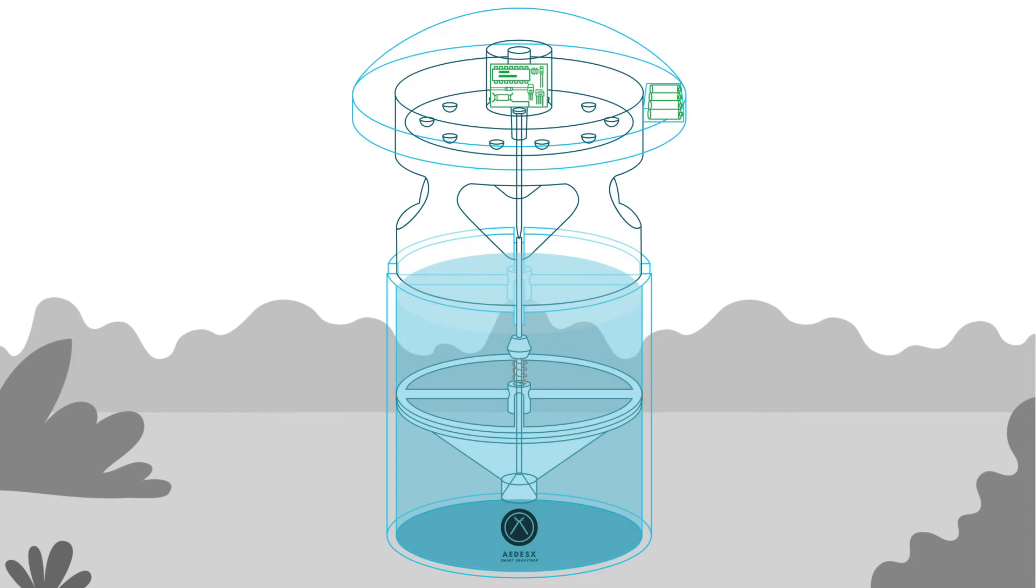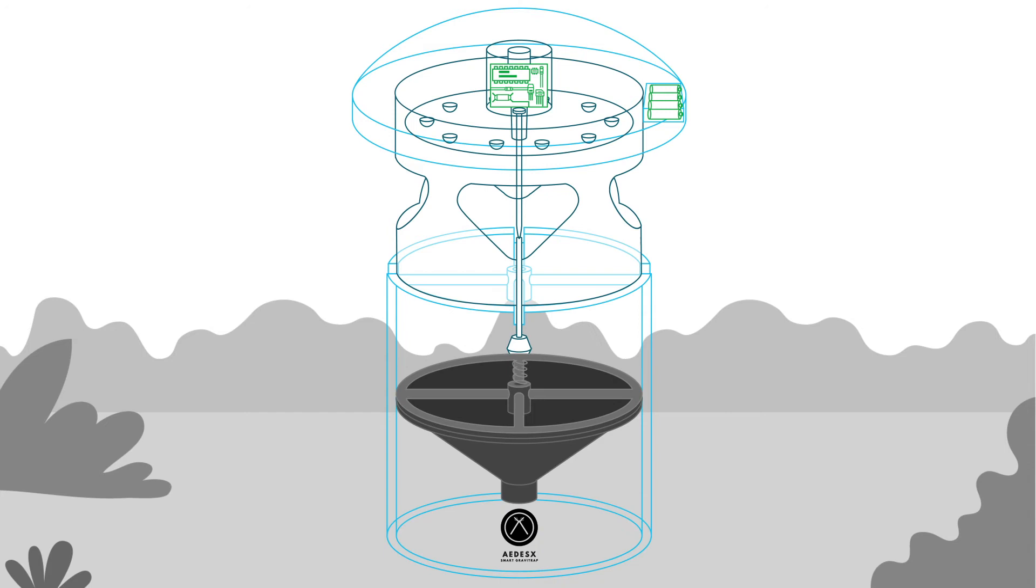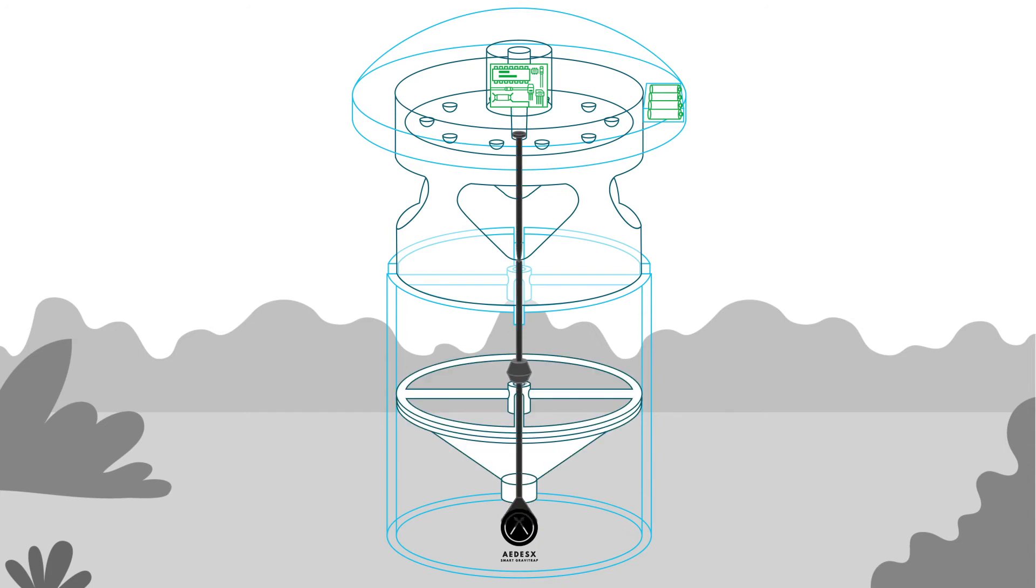The Aedes X Smart Gravitrap consists of a kill zone water reservoir, a funnel, a valve operation and negative phototaxis LED lights, designed with electronic intelligence built seamlessly into its design.